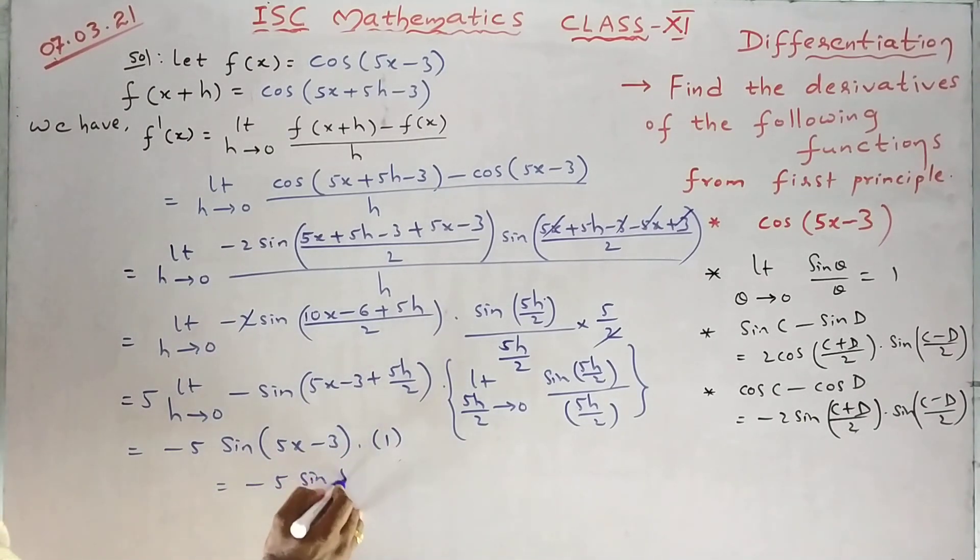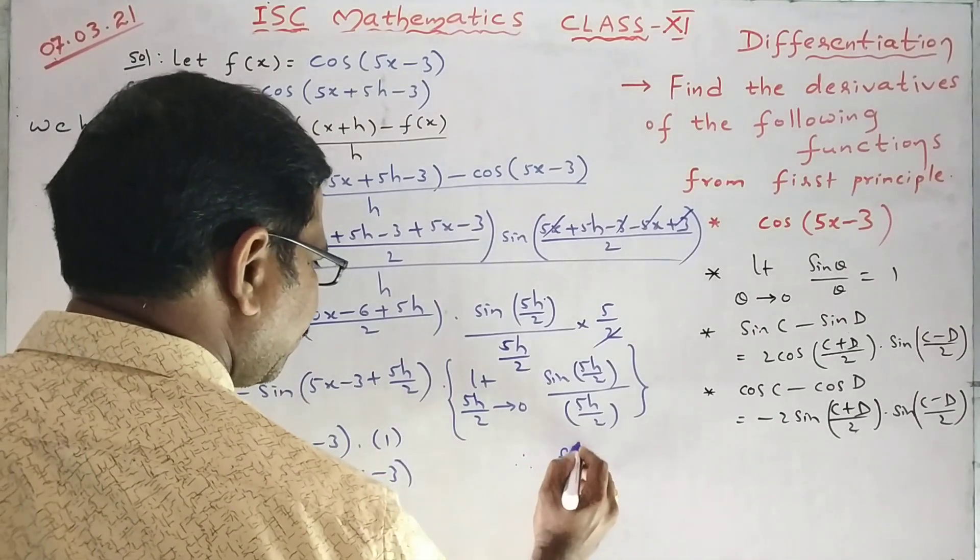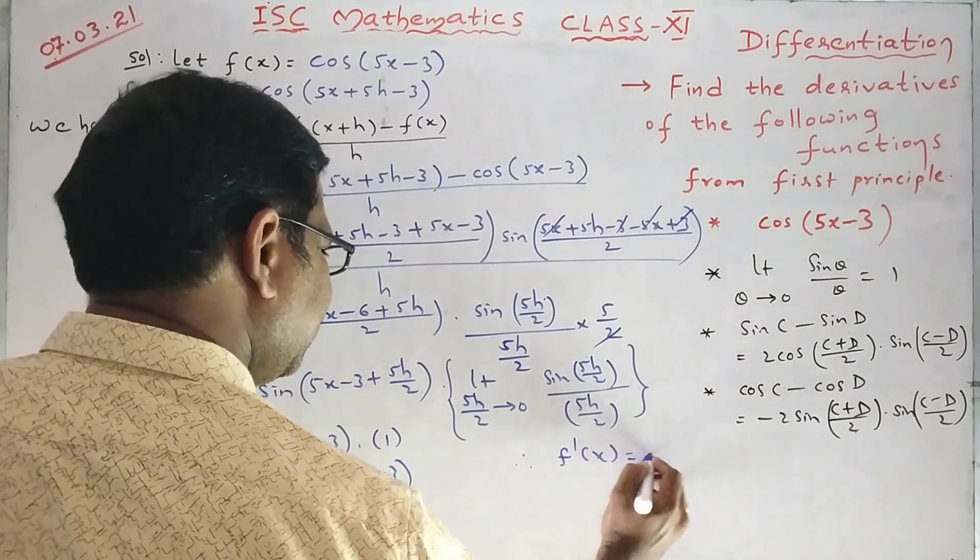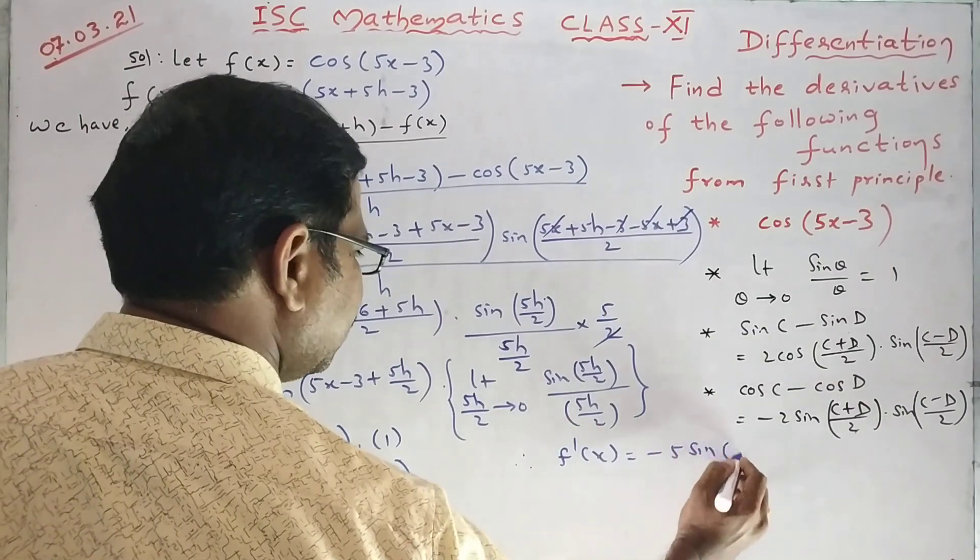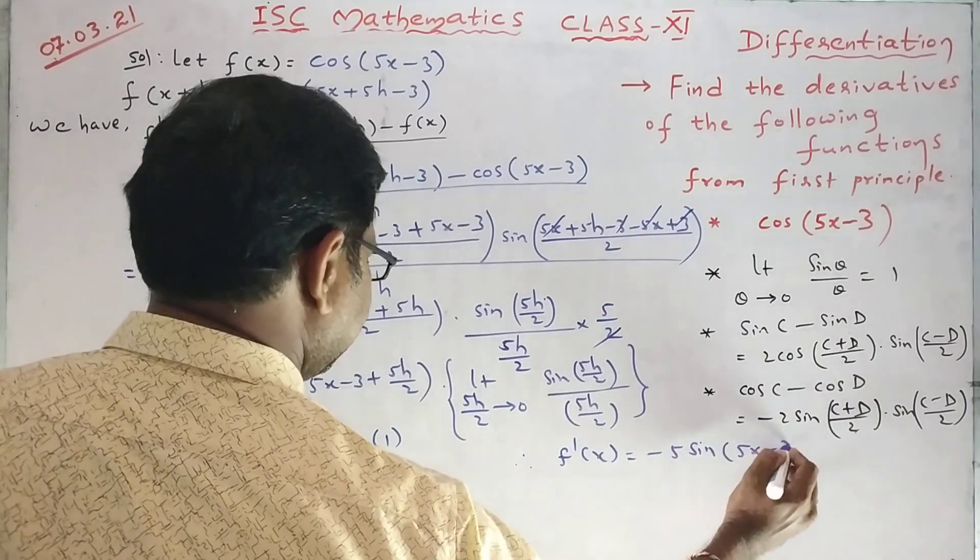So 5x minus 3 will remain, this value 1. So minus 5 sin. So what is the answer? Therefore, f dash x equal to minus 5 sin 5x minus 3.